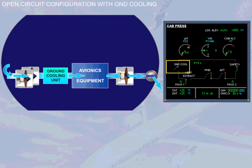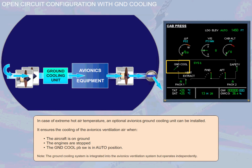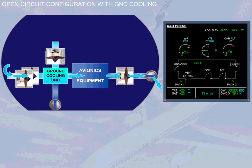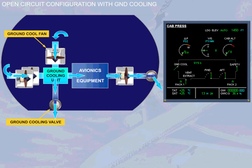Note: the ground cooling system is integrated into the avionics ventilation system but operates independently. The ground cooling unit is cooled using flowing ambient air. The flow of ambient air is drawn by the ground cool fan and then discharged overboard via the ground cooling valve. On the ECAM CAB PRESS page, the GROUND COOL indication gives the state of the avionics ground cooling system. Normally it remains white.